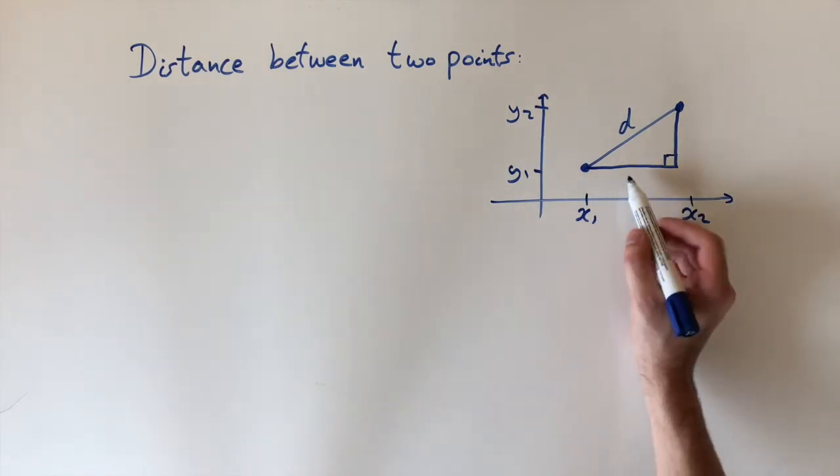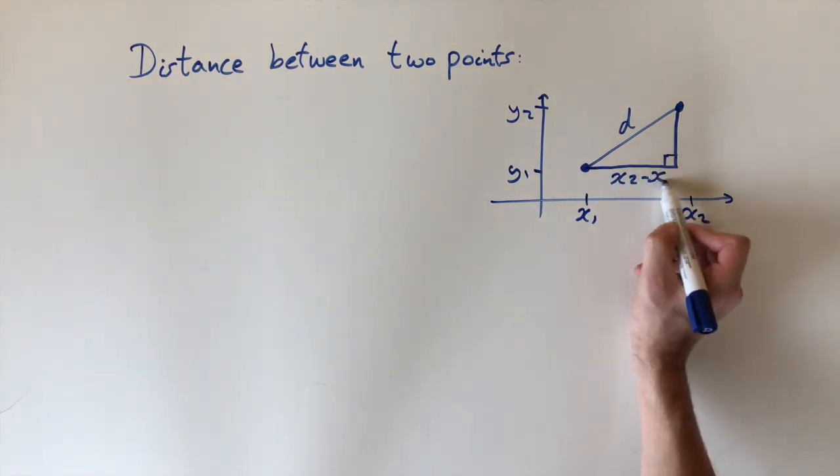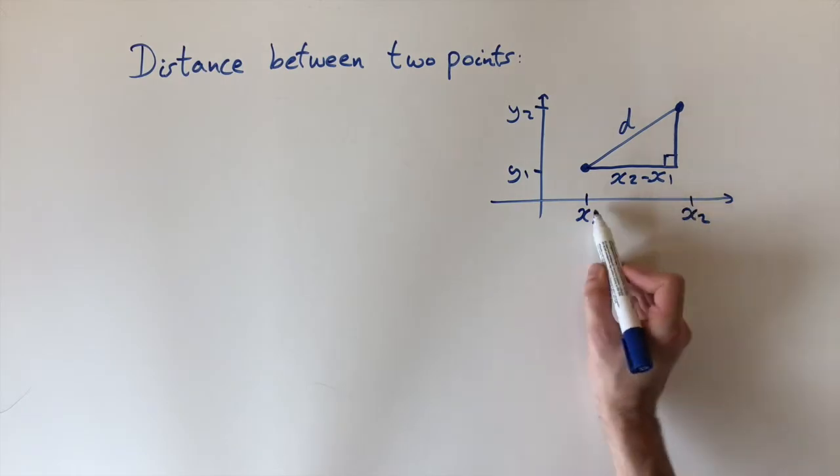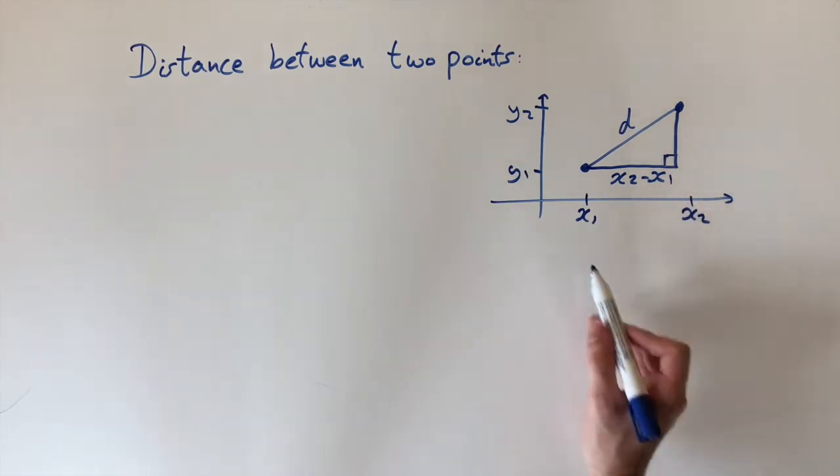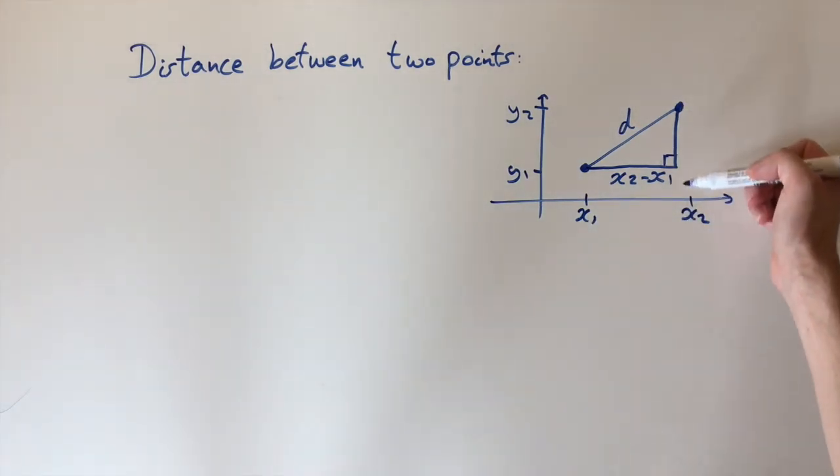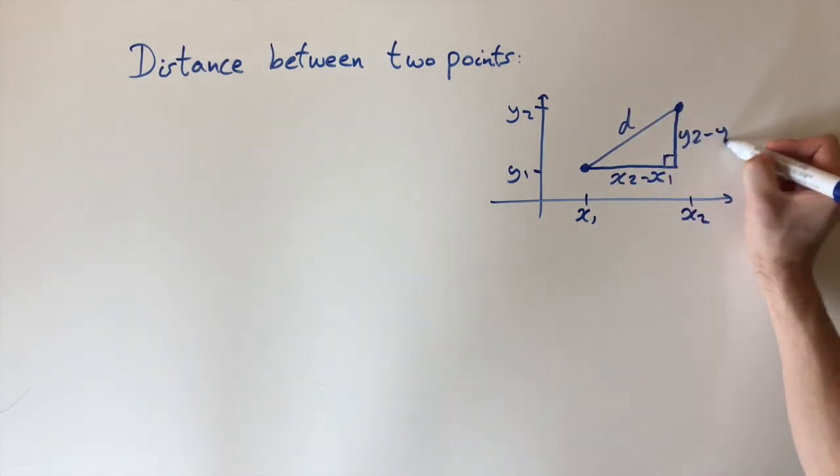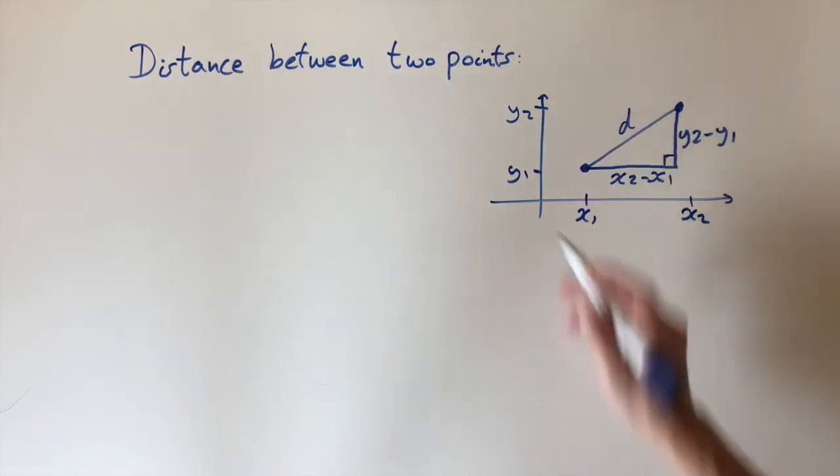So this line segment has length x2 minus x1. It's just the length of this interval, so we just take the difference of these two points. And the same for the vertical line, the y components. It's just y2 minus y1, just the difference between these two points.